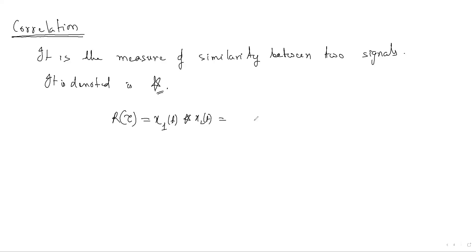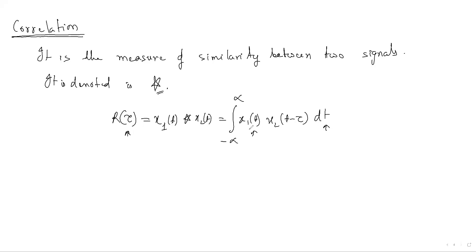The formula for correlation is similar to convolution but with a slight difference. In convolution, the variable inside is tau, but in correlation, here tau comes in one place and t in another. The difference is in those three positions in the formula. This is the formula for correlation.